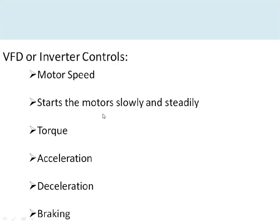In addition to varying speed, the VFD can also start the motor slowly and steadily. Without a VFD, motor starting current is very high — generally six times the rated current — so starters such as a star-delta starter or soft starter are needed. If you use a VFD, there is no need for any starters. It also controls torque and acceleration, and provides braking capability for the induction motor.